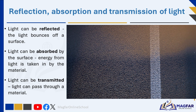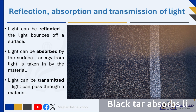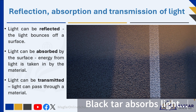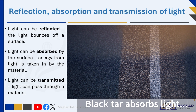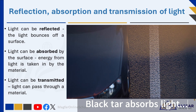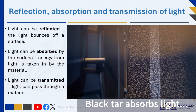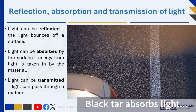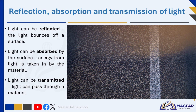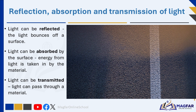Second, light can be absorbed by the surface, which means the energy from the light is taken in by the material. Dark surfaces, like a black tarred road, absorb most of the light that hits them, which is why they feel hotter in the sun.